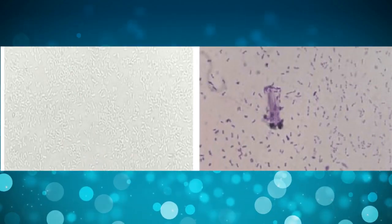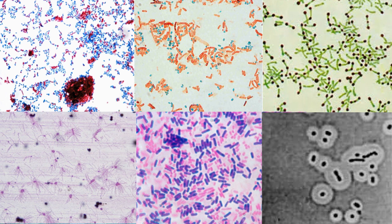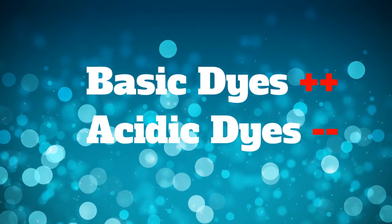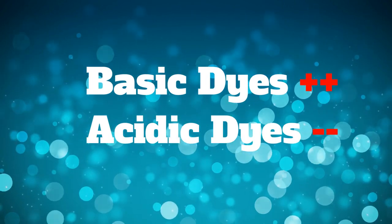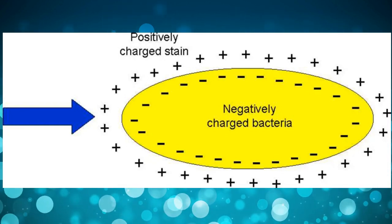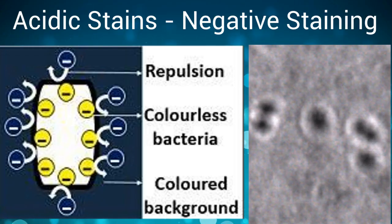Unstained bacteria on a fixed smear look all alike, so we use various staining techniques to create contrast and differentiate bacterial species. Dyes impart color to the bacterial cell or its parts by becoming affixed through a chemical reaction. Dyes are classified as basic or acidic, having a positive or negative charge respectively. Bacterial cells have many negatively charged acidic substances and thus stain readily with basic dyes.